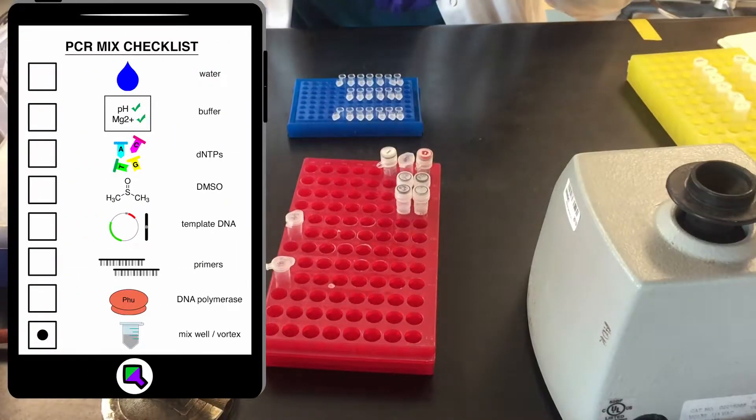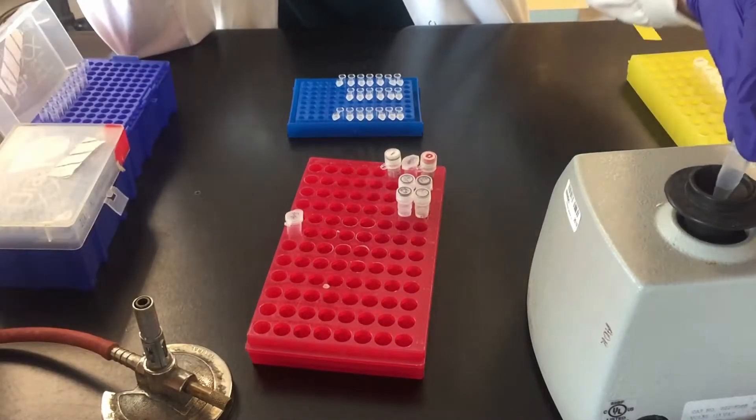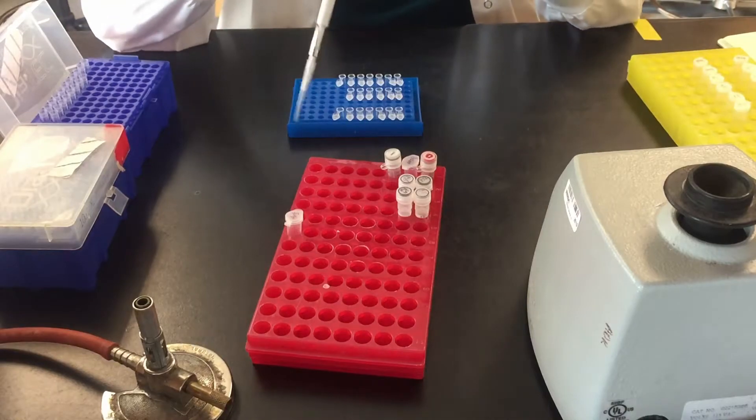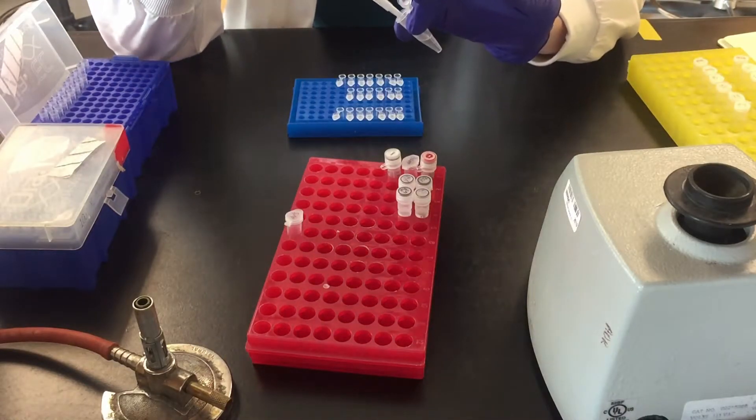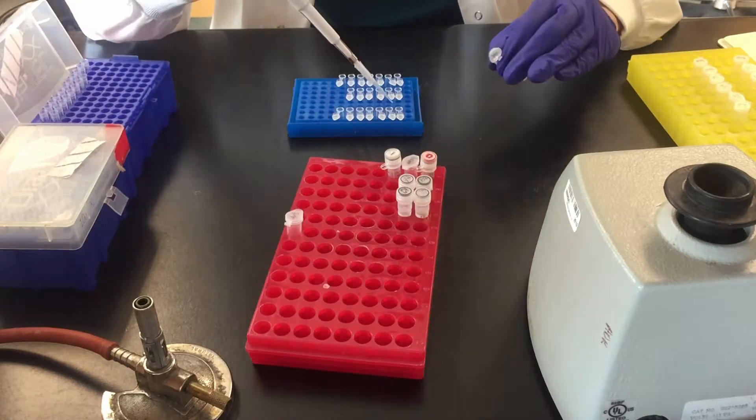It's very important to mix well by vortexing after you've added all the reagents. This is because DMSO and whatever the enzymes usually diluted in is more dense than water. We want all the reagents to be locally available for optimal polymerase efficiency.